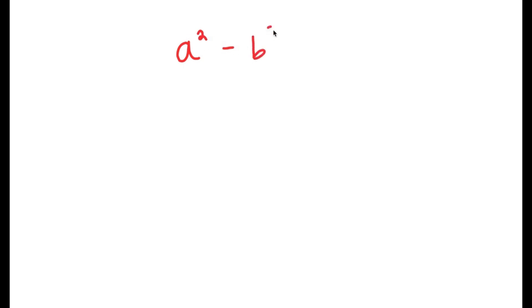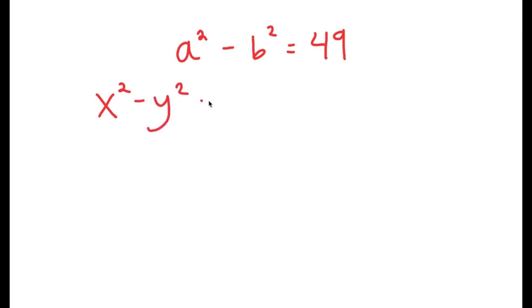In this video, I'm going to solve the equation a squared minus b squared is equal to 49. To solve this, I'm going to use the property that states that if I have something in the form x squared minus y squared, this is equal to x plus y times x minus y.